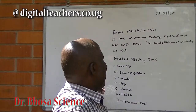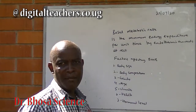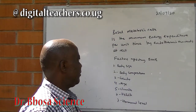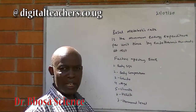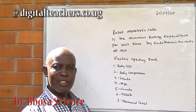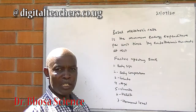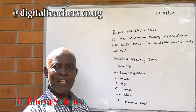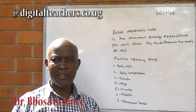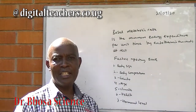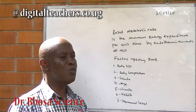Basal metabolic rate is the minimum energy expenditure per unit time by endothermic animals at rest. Factors affecting basal metabolic rate include body size: small organisms require less energy than big organisms because they have a large surface area to volume ratio, causing them to lose more energy. Body composition: animals with more fat expend less energy than those without fats, because fats are good insulators.